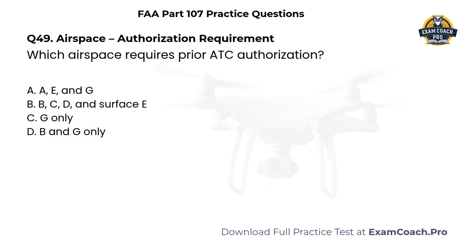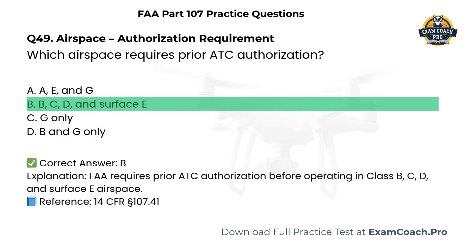Airspace — Authorization Requirement. Which airspace requires prior ATC authorization? A. Classes A, E, and G. B. Classes B, C, D, and Surface E. C. Class G only. D. Classes B and G only. Correct answer: B. Classes B, C, D, and Surface E. The FAA requires prior ATC authorization before operating in Class B, Class C, Class D, and Surface Class E airspace.